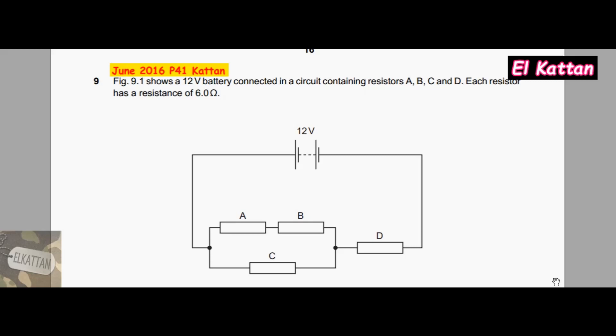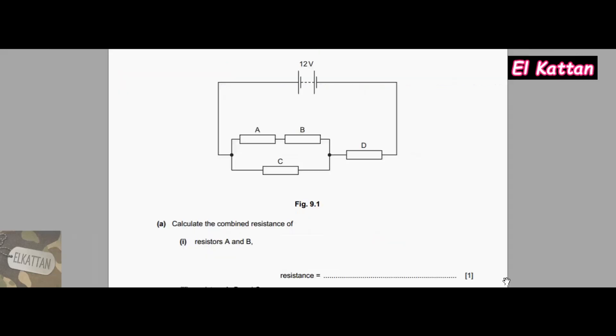Hi guys and welcome to a physics series. Today we have question 9. Figure 9.1 shows a 12-volt battery connected in a circuit containing resistors A, B, C, and D. Each resistor has a resistance of 6 ohms.